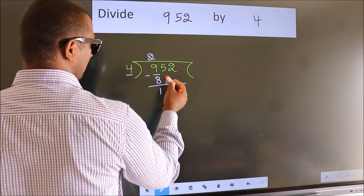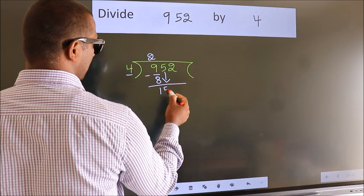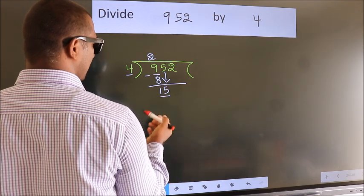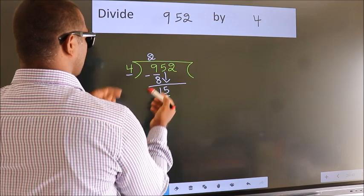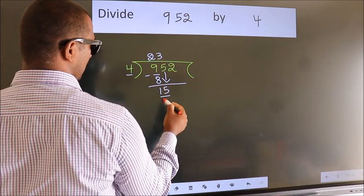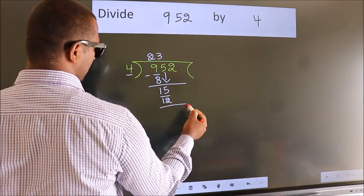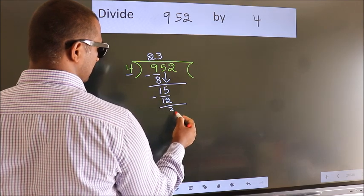After this, bring down the beside number. So 5 down. So 15. A number close to 15 in 4 table is 4 3s 12. Now we subtract. We get 3.